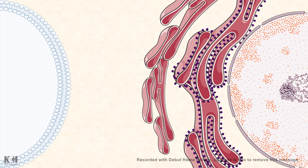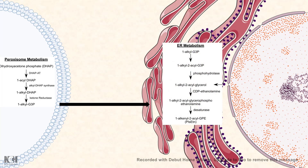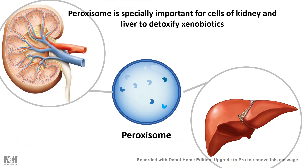Plasmalogen synthesis also takes place in the peroxisome. The peroxisome has all the important enzymes for the initial steps of plasmalogen production. Plasmalogen is produced from dihydroxyacetone phosphate (DHAP), and through sequential steps it forms one alkyl-G3P, which gets transported into the endoplasmic reticulum where the successive steps occur. So both the peroxisome and the ER play important roles in synthesizing plasmalogens, which are critical for the nervous system. For its detoxification and recycling function, the peroxisome is especially important in liver and kidney cells, where most xenobiotic and harmful compounds are detoxified.